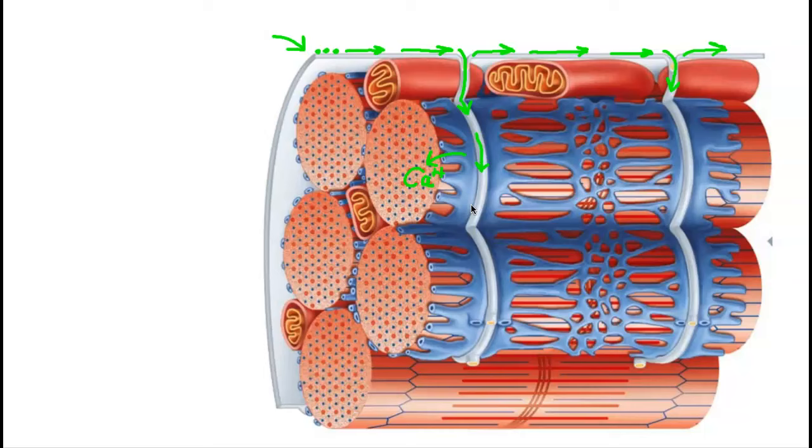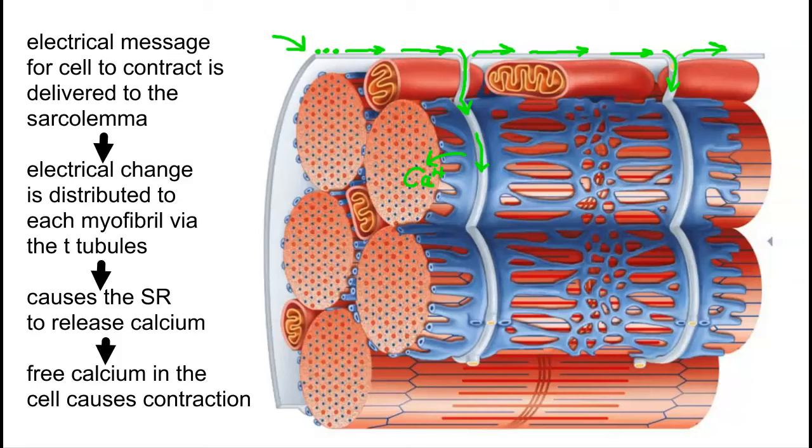In summary, the T-tubules together with the sarcoplasmic reticulum provide a means through which the electrical message for the cell to contract is being distributed to each myofibril within the cell.